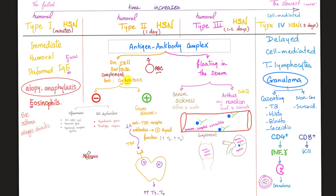Here is a quick overview of the four types of hypersensitivity. Type 1: immediate, within minutes, humoral immunity, IgE — preformed antibodies. Remember: IgE is associated with allergy, anaphylaxis, atopy, asthma, eosinophils.